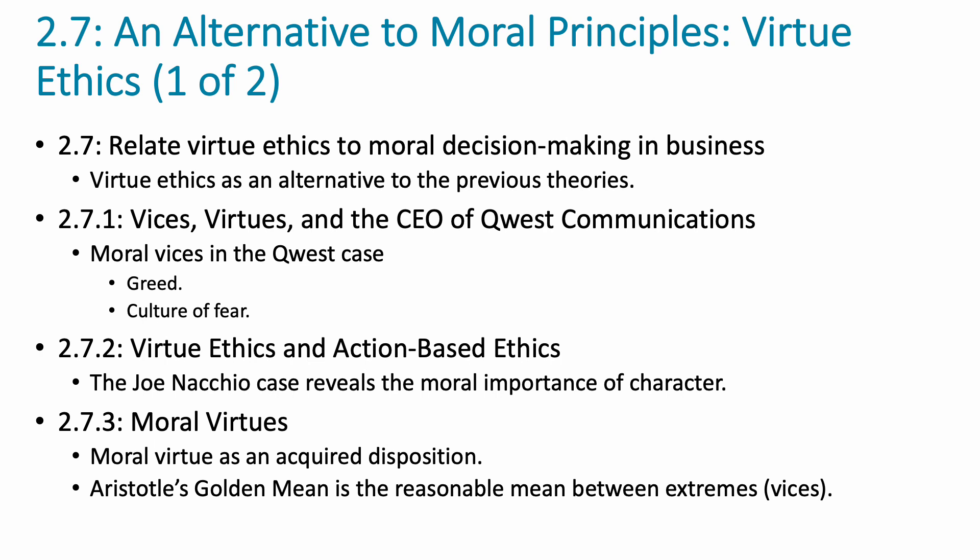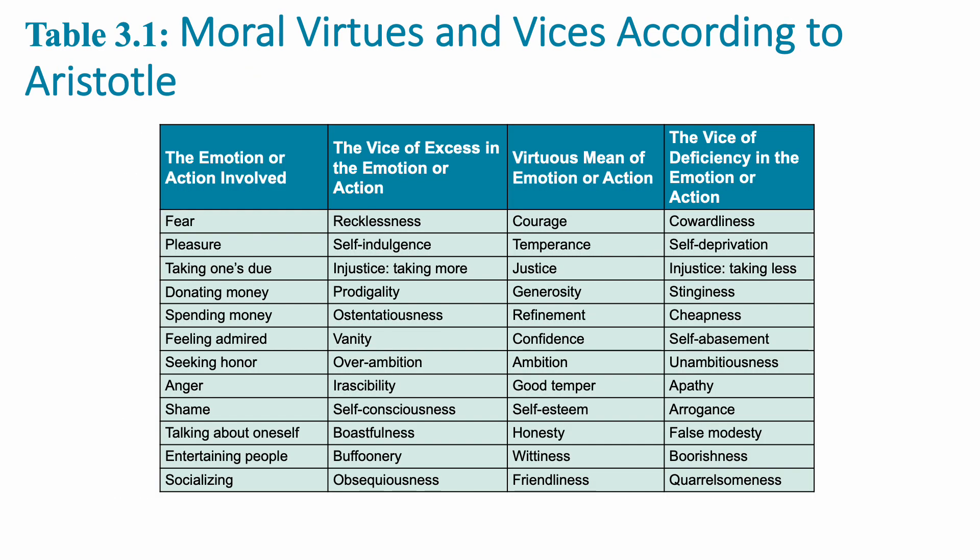Aristotle's golden mean is that reasonable, virtuous space in between the two extremes of either deficiency or excess. On the slide, the third column — the virtuous mean of emotion or action — is our golden mean, what we want to see in terms of behaviors. How we define it depends on context. When we think about the emotion of fear, the virtuous response should be courage — we don't want the deficient position of cowardliness, like the cowardly lion in the Wizard of Oz.